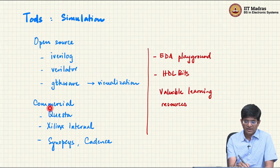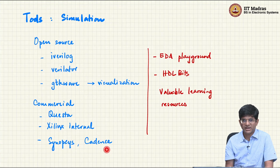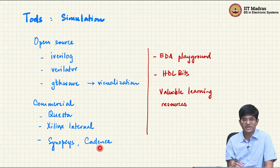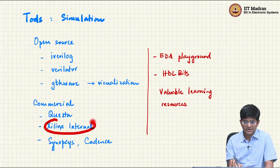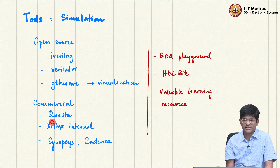There are also a number of commercial tools. For example, there is the Questa simulator from Mentor Graphics, and Xilinx and Altera have their own internal simulation tools. Synopsys and Cadence are the two biggest EDA companies, and Mentor Graphics from Siemens usually comes in third. All of these have their own tools which specialize in different areas. Questa from Mentor Graphics is considered extremely good for simulation, but for synthesis, placement and routing, it is usually Synopsys or Cadence that comes out on top. For FPGAs, we mostly use the internal tools provided by the vendor.